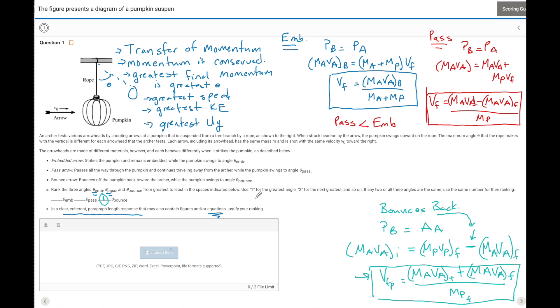And we knew that pass was less than embed. So if we look at the embed right here, we see once again, this is greater than this. So embed is going to be the second. And the pass is going to be the third smallest angle.